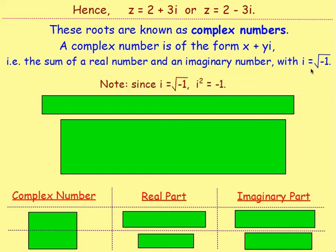Note that if i = √(−1), then i² — well, you're squaring and you've got the square root, so you end up with negative 1. So i² = −1, and i = √(−1).